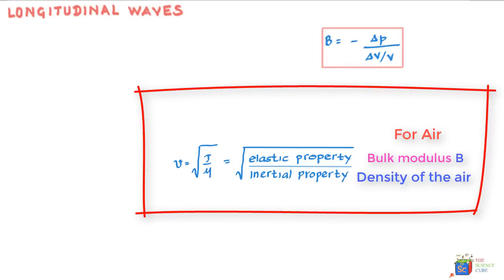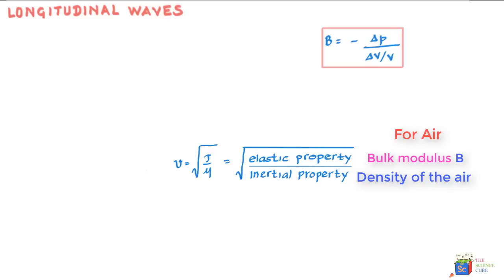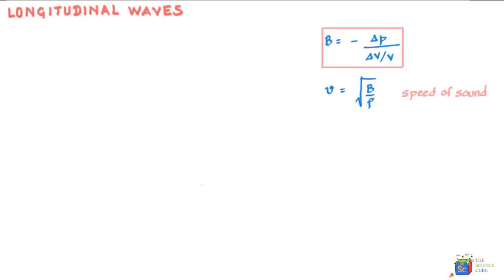So putting B in the equation for velocity and rho for mu, what we get is velocity of sound can be written as v is equal to under root B upon rho.